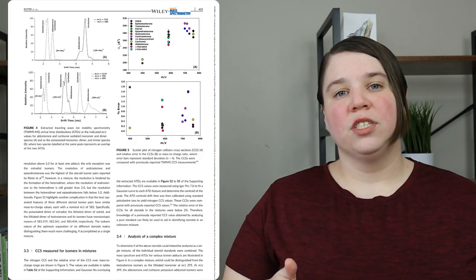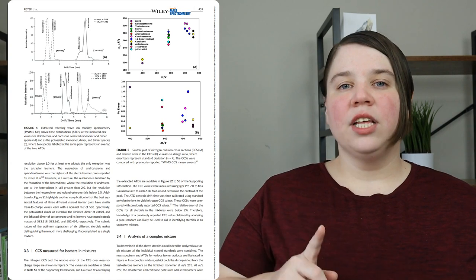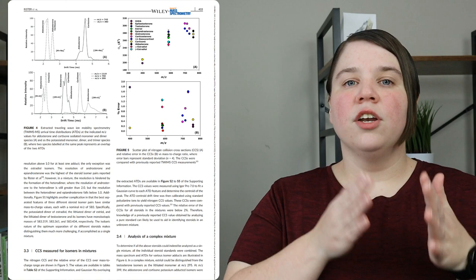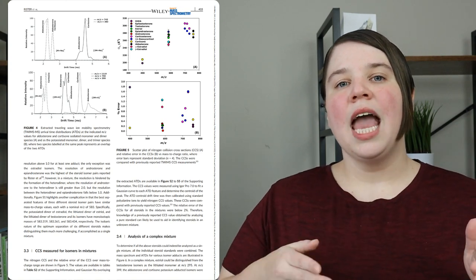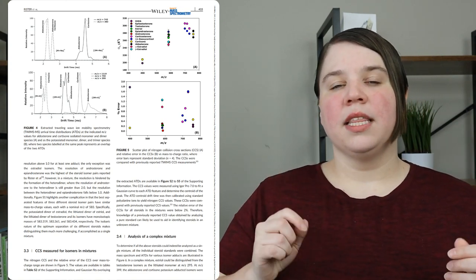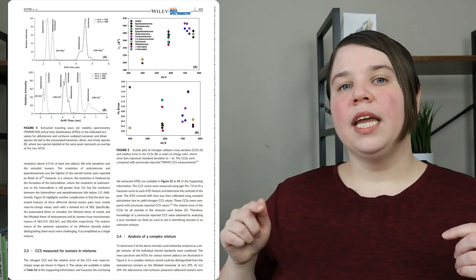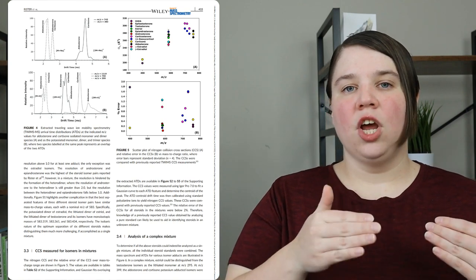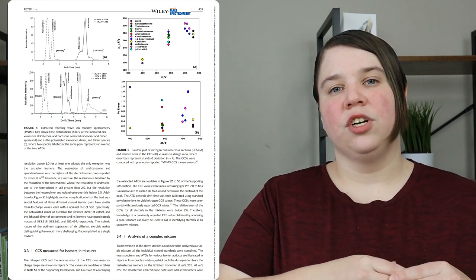Now we get to jump into the meat of the research paper. We think this is going to answer our questions. The very first thing I always do is go to the results section first. I look at the figures from the results section — I go through each figure and understand what it's trying to tell me. If I don't understand something, I'll read that section of the results to see what it's actually trying to show or whether there's something additional I should have known.